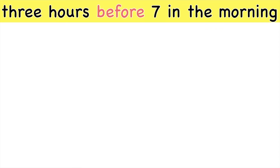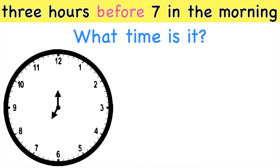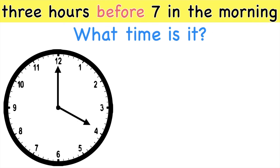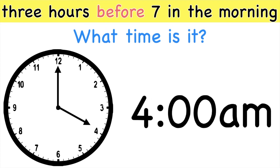How about this one? 3 hours before 7 in the morning. What time is it? For example, this is your 7 o'clock. So we're going to count 3 hours before. Let's count backwards: 1, 2, 3. So what time is it, children? It's 4 o'clock a.m.